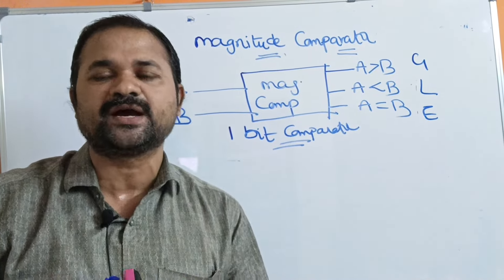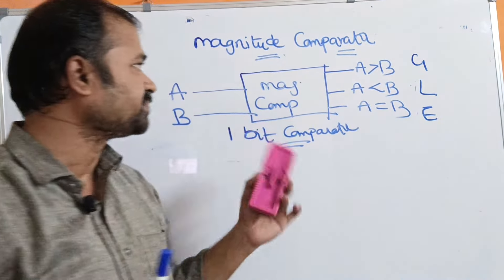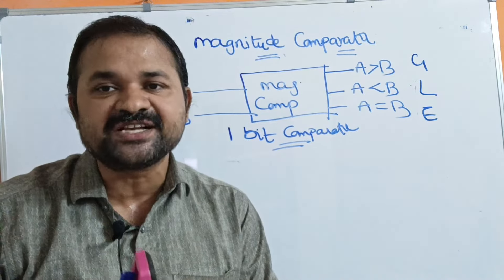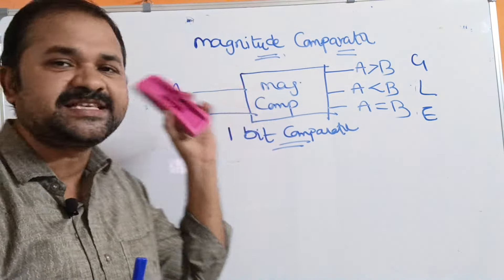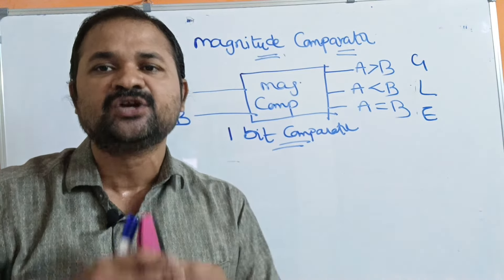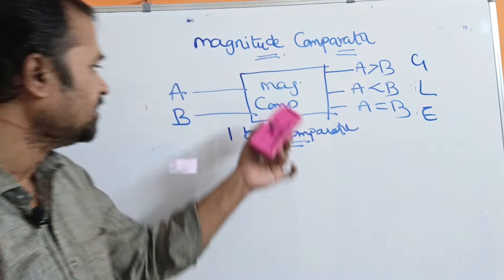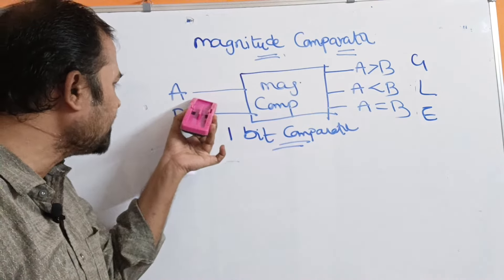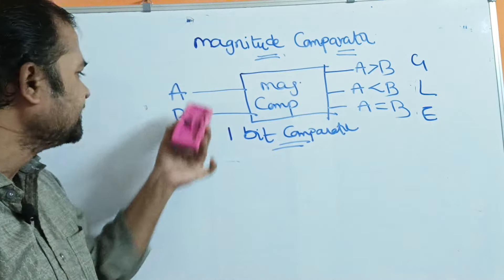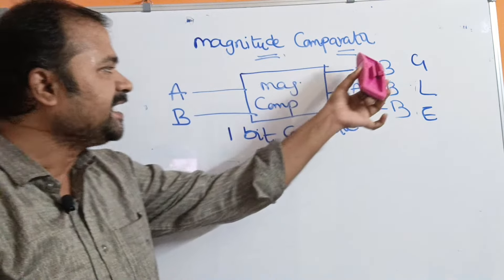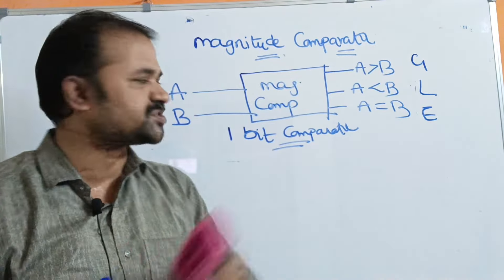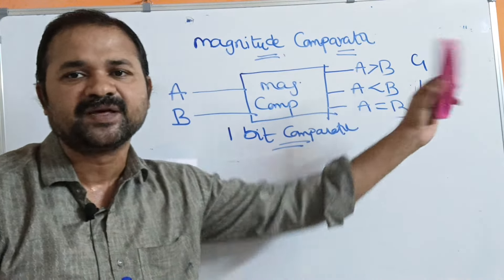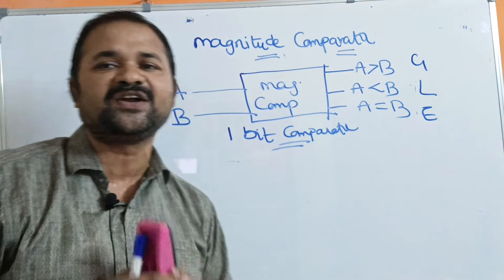Let us discuss magnitude comparators. A magnitude comparator is a combinational circuit which is mainly useful in order to compare two binary numbers such as A and B. It mainly produces three outputs: greater than, less than, and equal to — that is, A greater than B, A less than B, and A is equal to B.